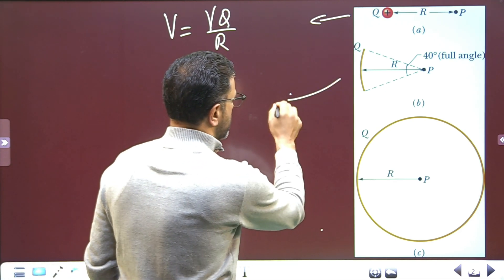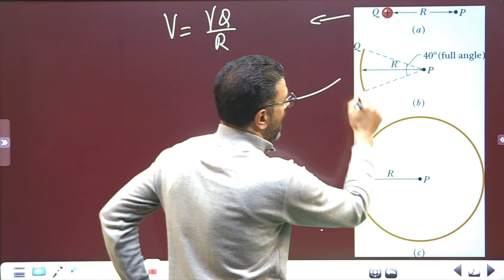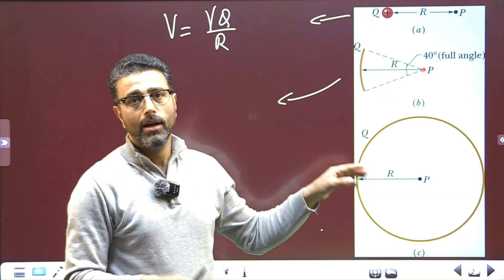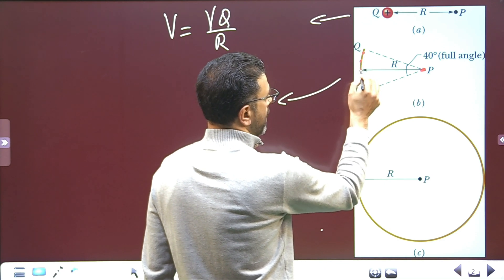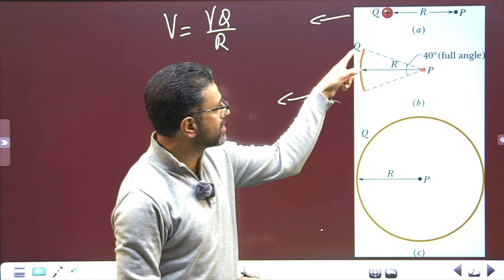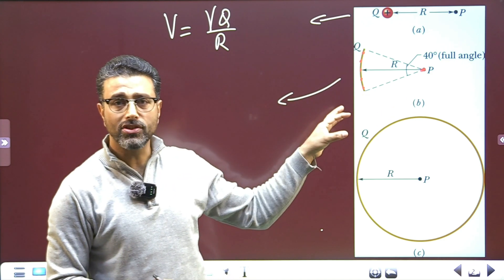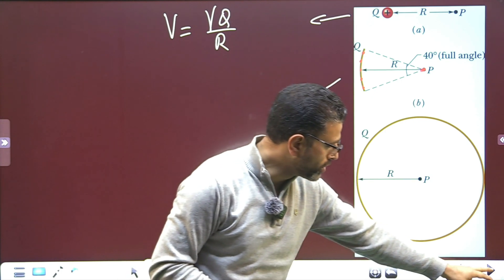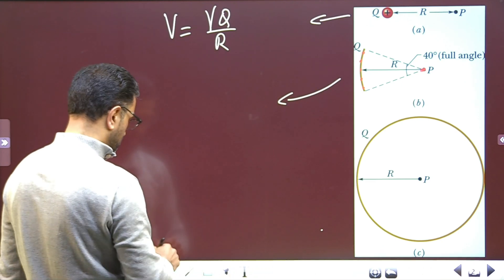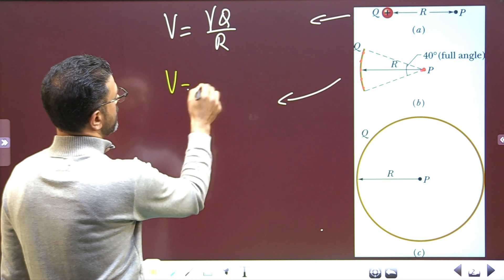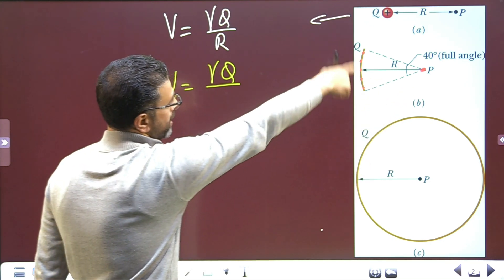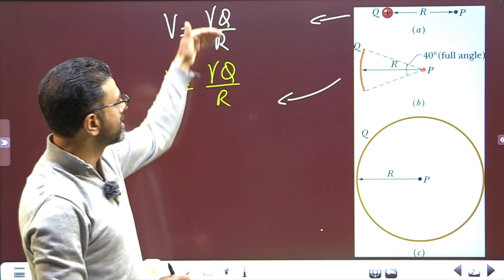In the second case, we have an arc. Note that point P, where we have to find the potential, is the center of curvature of the arc. That means every point on the arc is at the same distance R from point P. So all the charge elements are equidistant from P, and we use: gamma times total charge divided by common distance. The potential is gamma Q divided by R — the same as the first case.